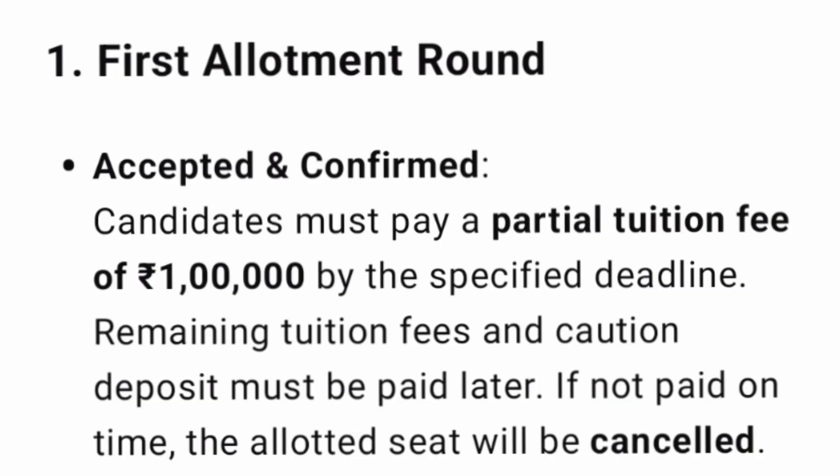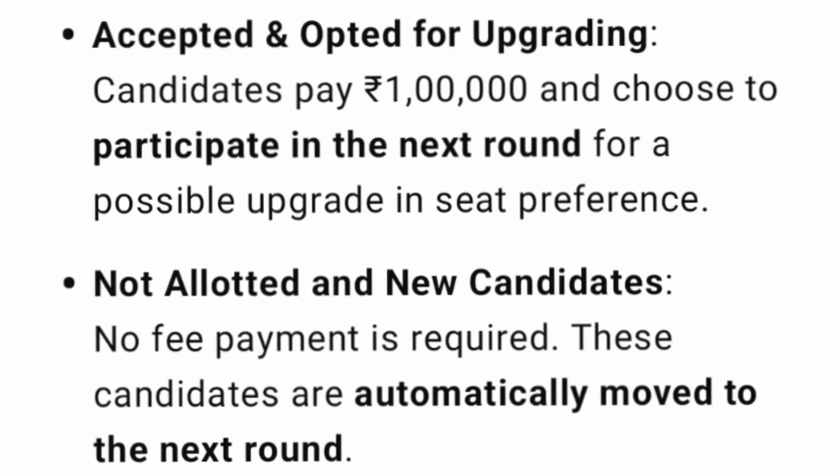After the first allotment, there are three types of students. First: accept and confirm — you pay the partial tuition fees of 1 lakh rupees, and the remaining fees are due by 24th June. If you don't pay the 1 lakh, your seat will be automatically cancelled. Second: accepted and opted for upgrading — pay 1 lakh and participate in the next round for a possible upgrade. Third: not allotted any seat or new candidates — they don't need to pay any fees and will be automatically moved to the next round.